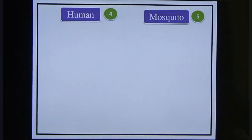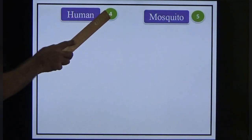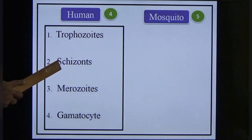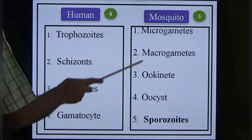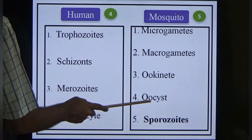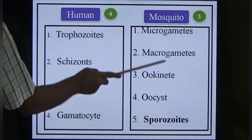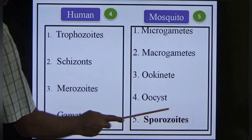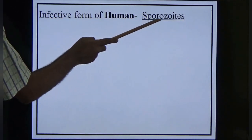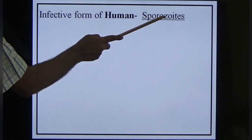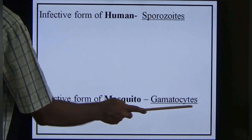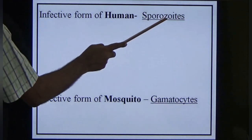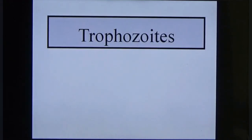There are totally nine morphological stages — four in humans and five in mosquitoes. In humans: trophozoite, schizont, merozoite and gametocyte. In mosquitoes: microgamete, macrogamete, ookinete, oocyst and sporozoite. We will study the sporozoite because it is the infective form for humans and produces malaria. The infective form of the mosquito is the gametocyte.